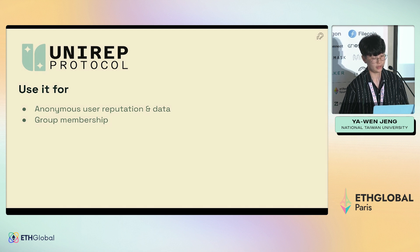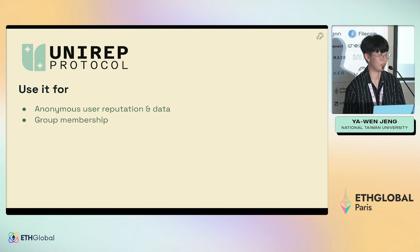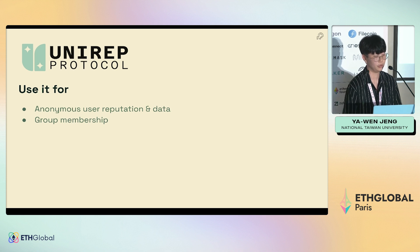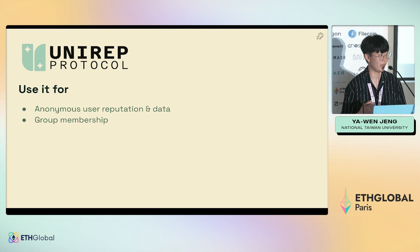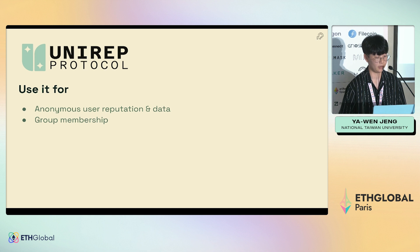UNIREP can be used for reputation or data applications. For example, you have GitHub and you want to prove how many stars and followers you have — you can use this protocol. You turn web2 data into web3 and generate a zero-knowledge proof to prove you have a certain amount of GitHub stars. You can also prove membership — for example, proving you are a user of GitHub.